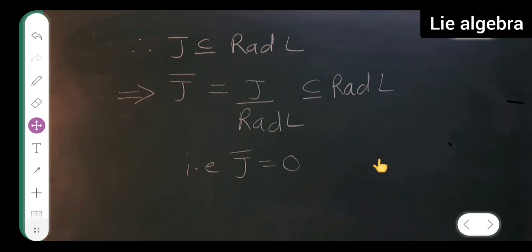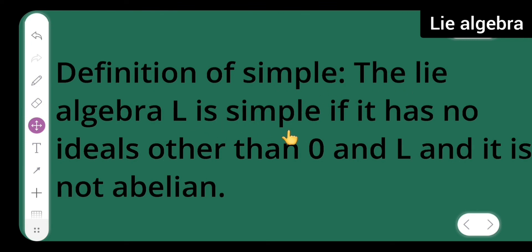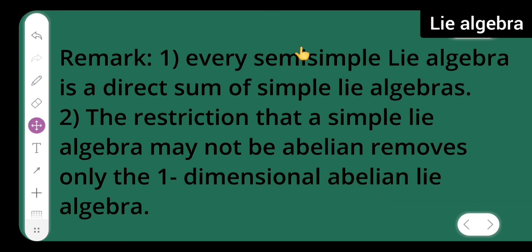Definition of simple: a Lie algebra is simple if it has no ideals other than zero and l itself, and it is not abelian. Remark: every semi-simple Lie algebra is a direct sum of simple Lie algebras. Second remark: the restriction that a simple Lie algebra may not be abelian removes only the one-dimensional abelian Lie algebra. With this I am done with today's lecture.